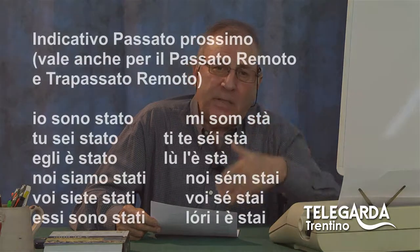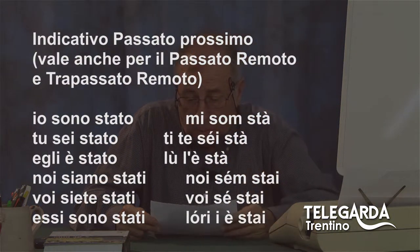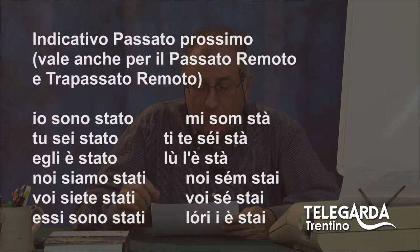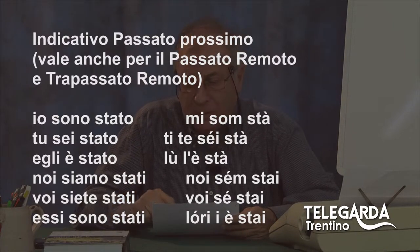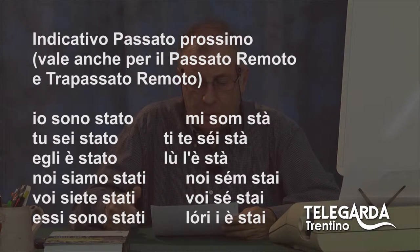Adesso andiamo al tempo passato che si compone facilmente. Io sono è il presente, il passato prossimo è io sono stato. Io sono stato, tu sei stato, egli è stato, noi siamo stati, voi siete stati, essi sono stati. Vi dico subito che questo indicativo passato prossimo vale anche per il passato remoto e il trapassato remoto. Con questa forma abbiamo tre tempi: il passato prossimo, il passato remoto e il trapassato remoto. In italiano sarebbero: io sono stato, io fui, io fui stato.